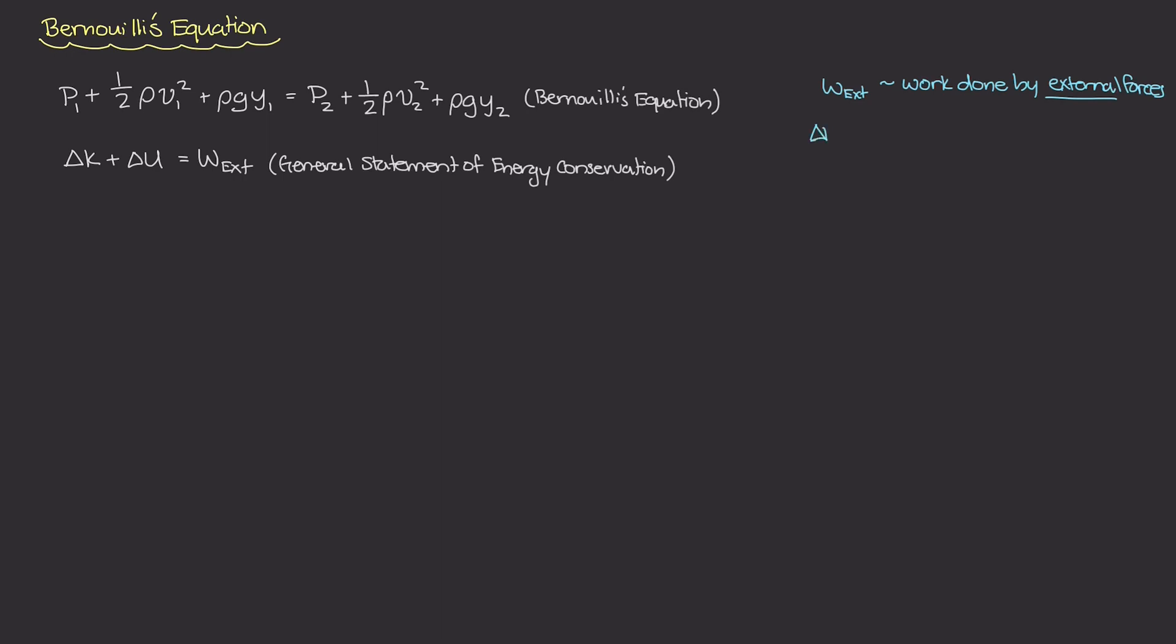The delta K term, which is the change in total kinetic energy, you might know as 1/2 mv2² minus 1/2 mv1², where m is the mass and v is the velocity at that point.